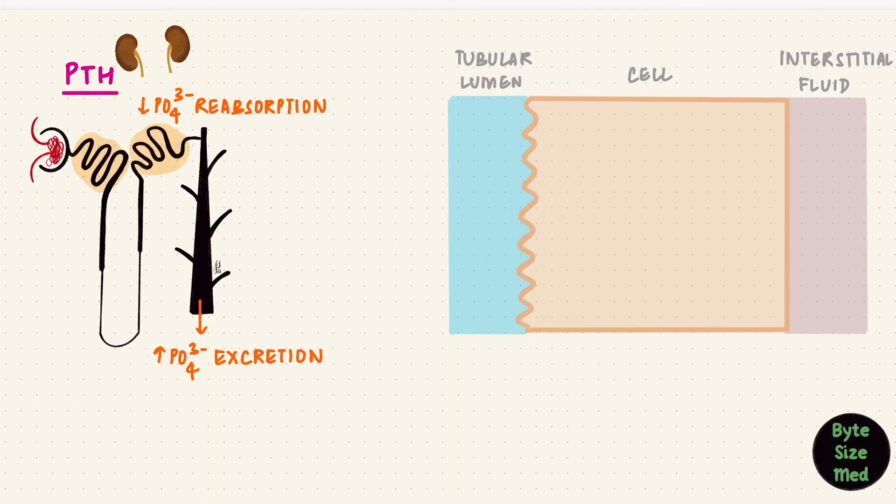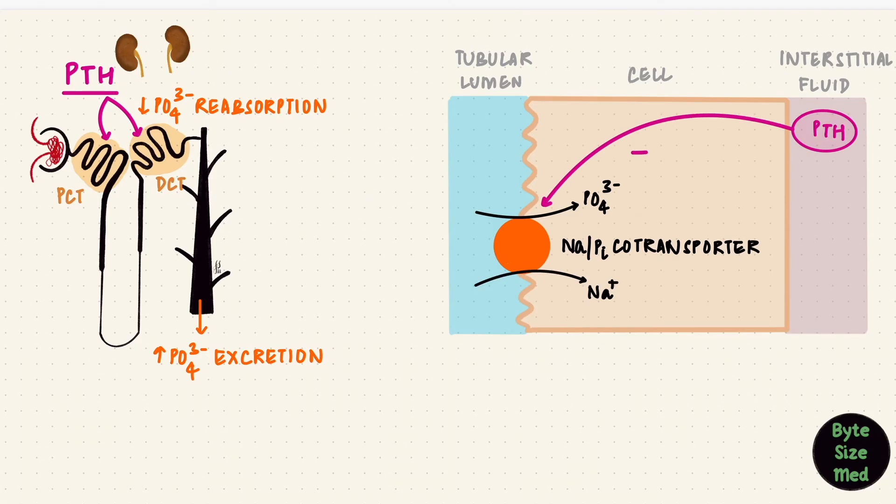The kidney reabsorbs phosphate in the proximal tubule and the distal tubule. And this is where PTH acts for phosphate. Phosphate gets reabsorbed using sodium phosphate co-transporters. PTH reduces these transporters. It puts them into vesicles, reducing how many can reabsorb phosphate. So what happens? It gets excreted and appears in urine.